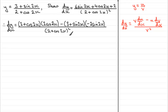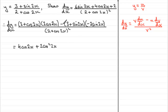That's the differentiating part done. We just need to expand the two terms on the top. 2 times 2 cos 2x gives 4 cos 2x; cos 2x times 2 cos 2x gives plus 2 cos² 2x. Then minus 3 times minus 2 sine 2x gives plus 6 sine 2x. Finally, minus sine 2x times minus 2 sine 2x gives plus 2 sin² 2x.